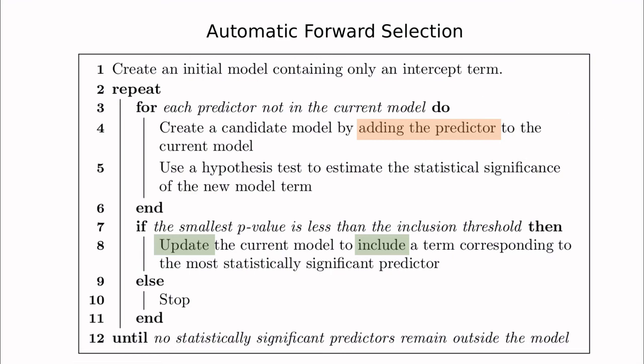One category is called automatic forward selection. The idea of forward is very simple: start with one predictor, and then you add another one, and another one, another one, and you update the model each time you include a new feature. So basically, you compare how significant is the new feature according to the previous one. Of course, you have to randomize this inclusion because the way in which you start is going to affect the outcome. This is not very used these days.